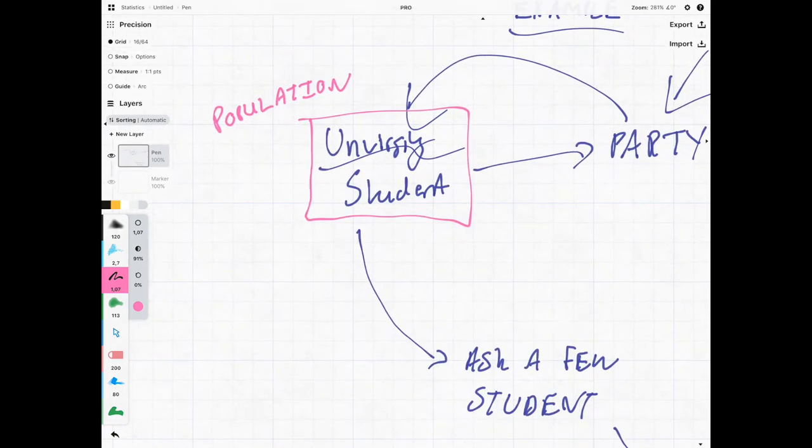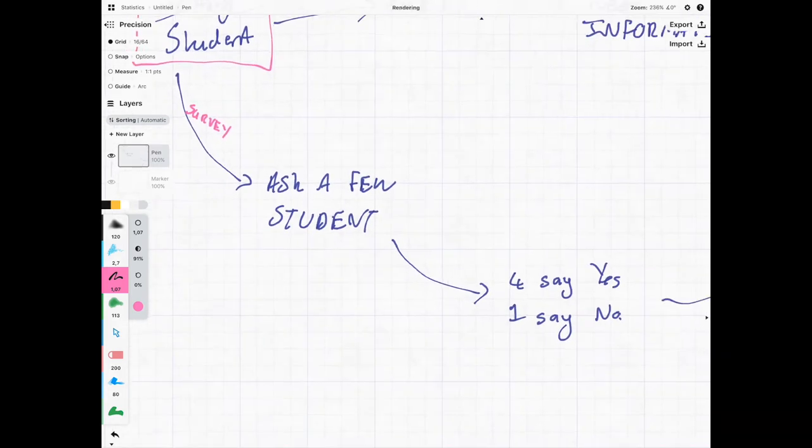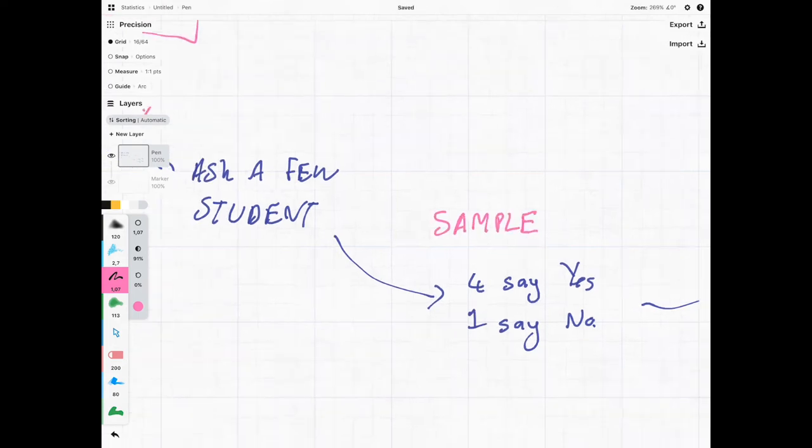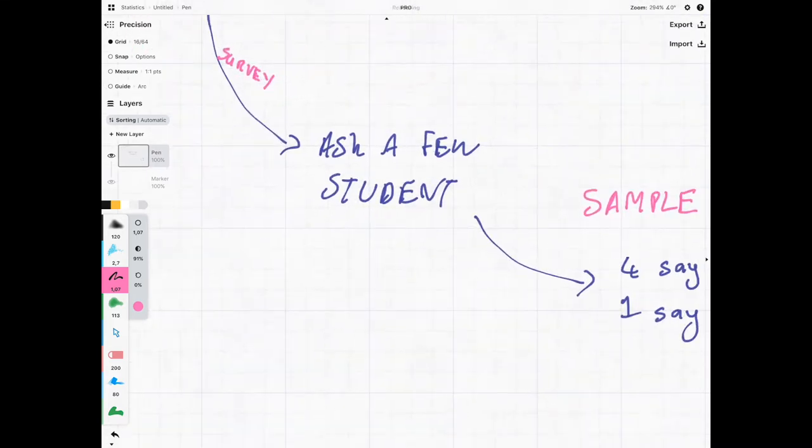We then do something known as a survey, and once we've asked a few students, this will be our sample. So we have our population is everyone, but the five people are the sample. Now, this is where it gets interesting.